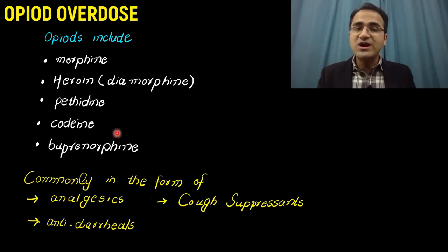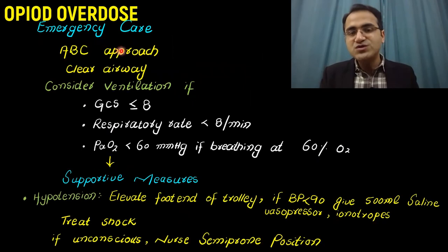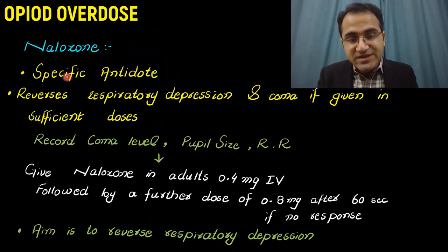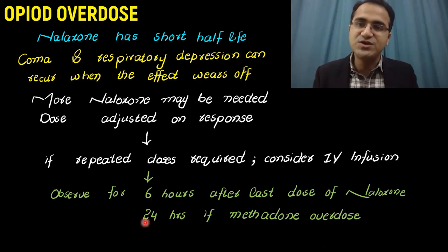In summary, we covered the different opiate compounds, the classical triad of presentation, the ABC approach to maintaining the airway, supportive measures for treating shock, naloxone dosages in adults and children, the short half-life of naloxone requiring repeat dosing, and the importance of observing the patient after treatment.